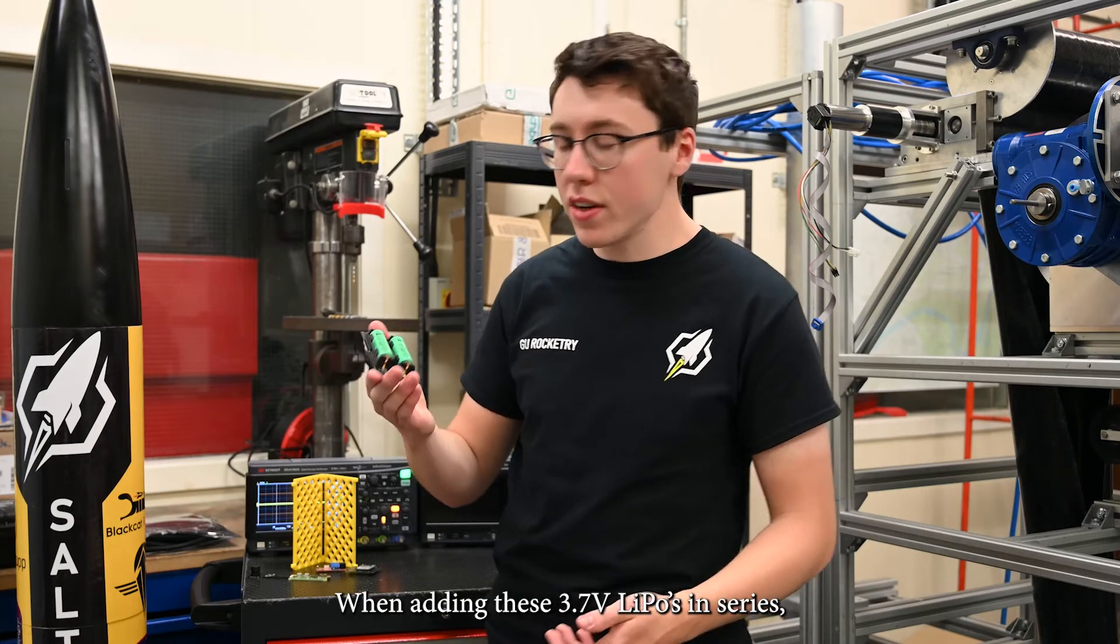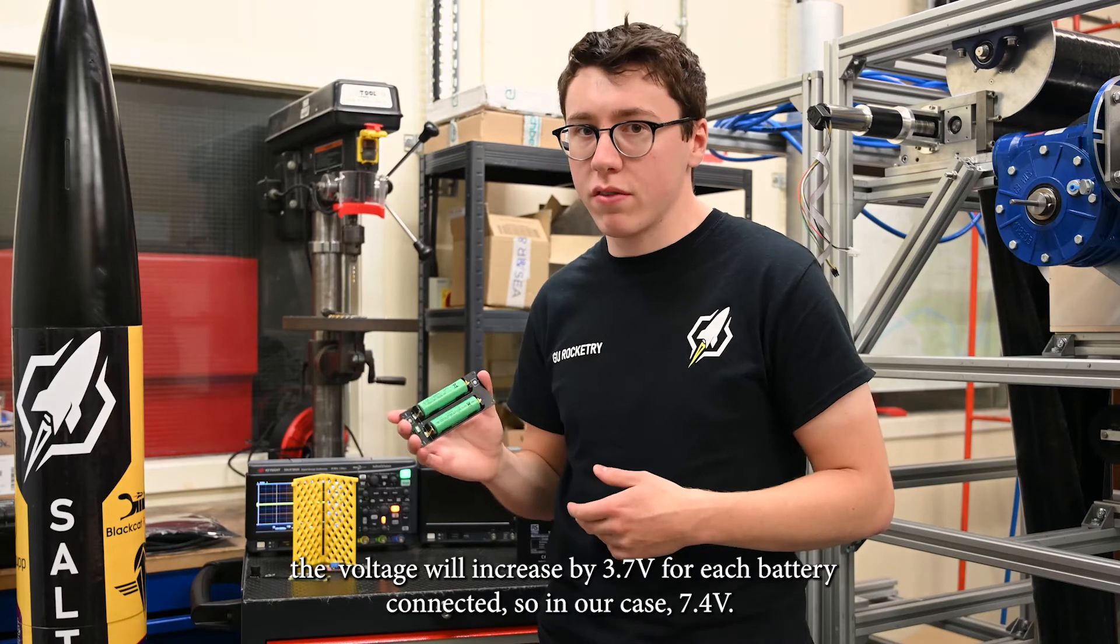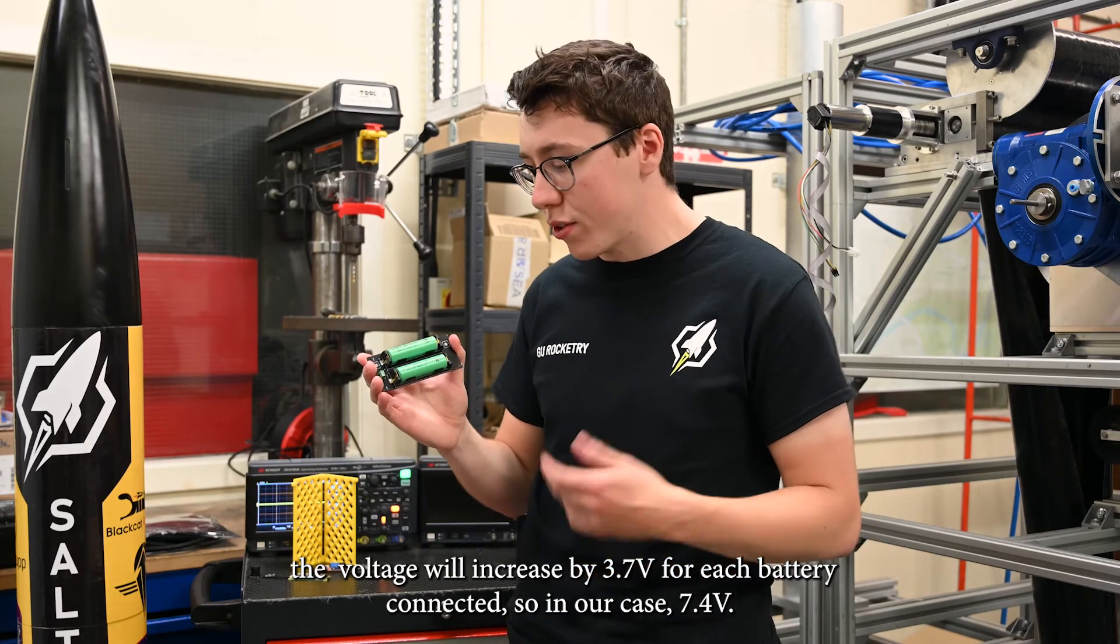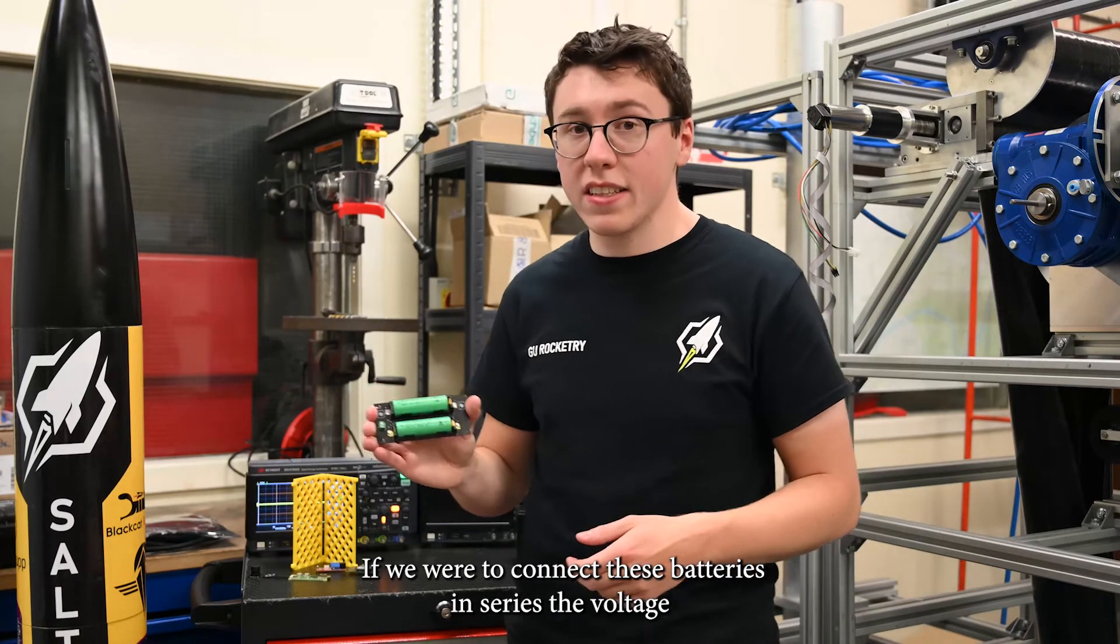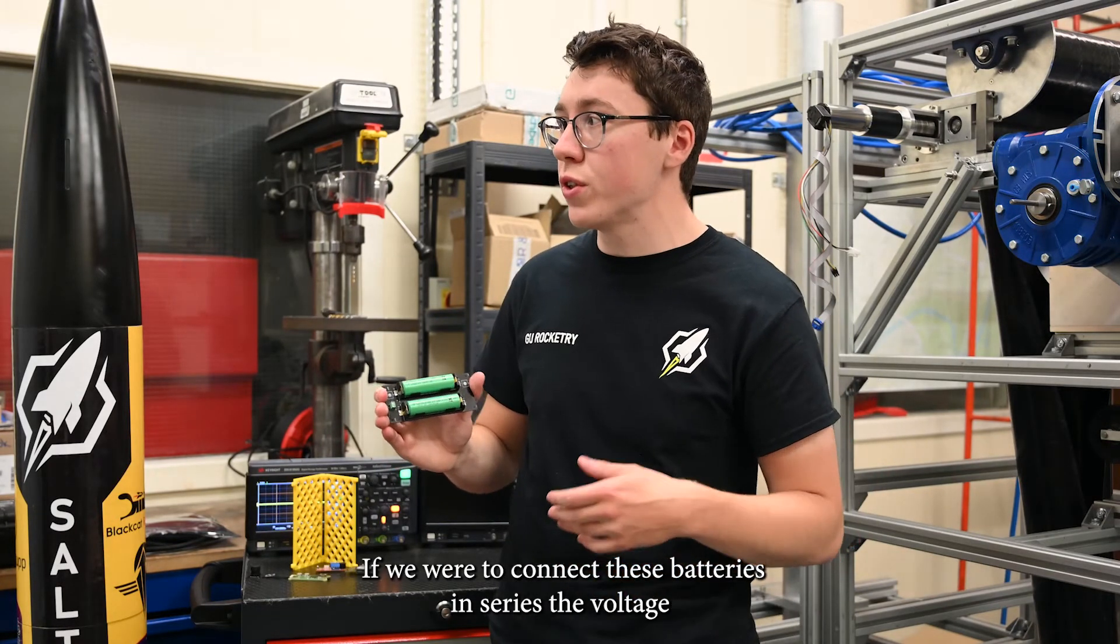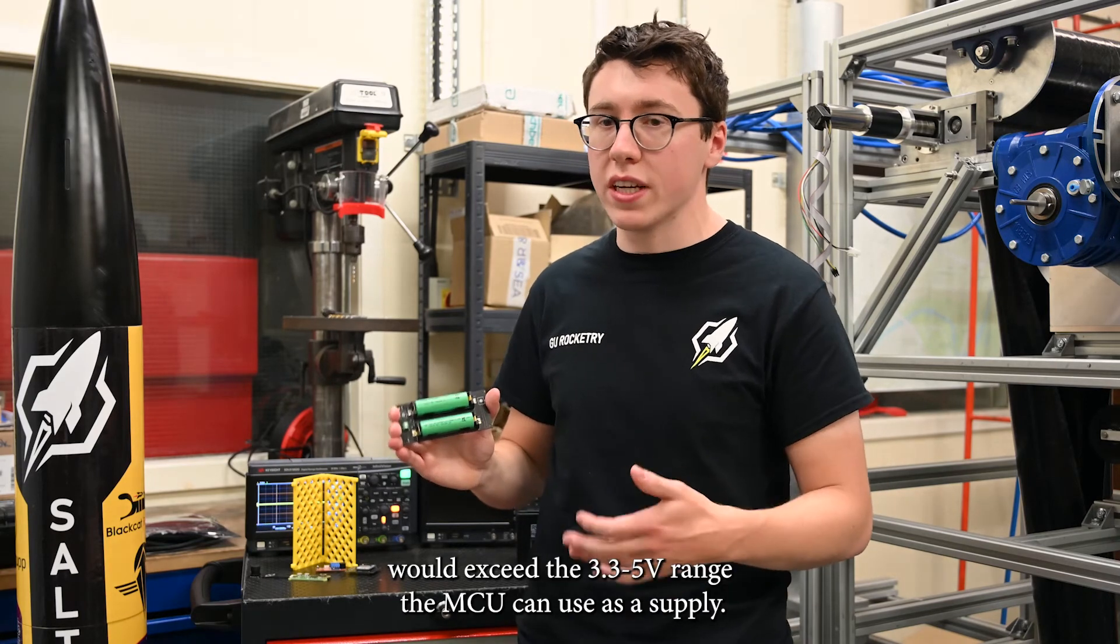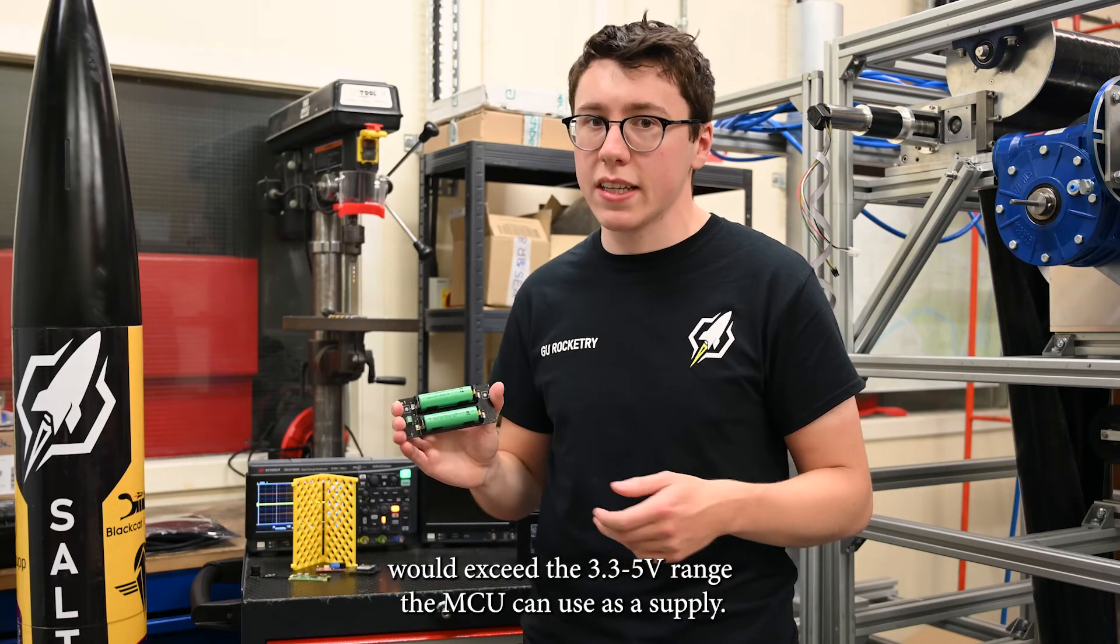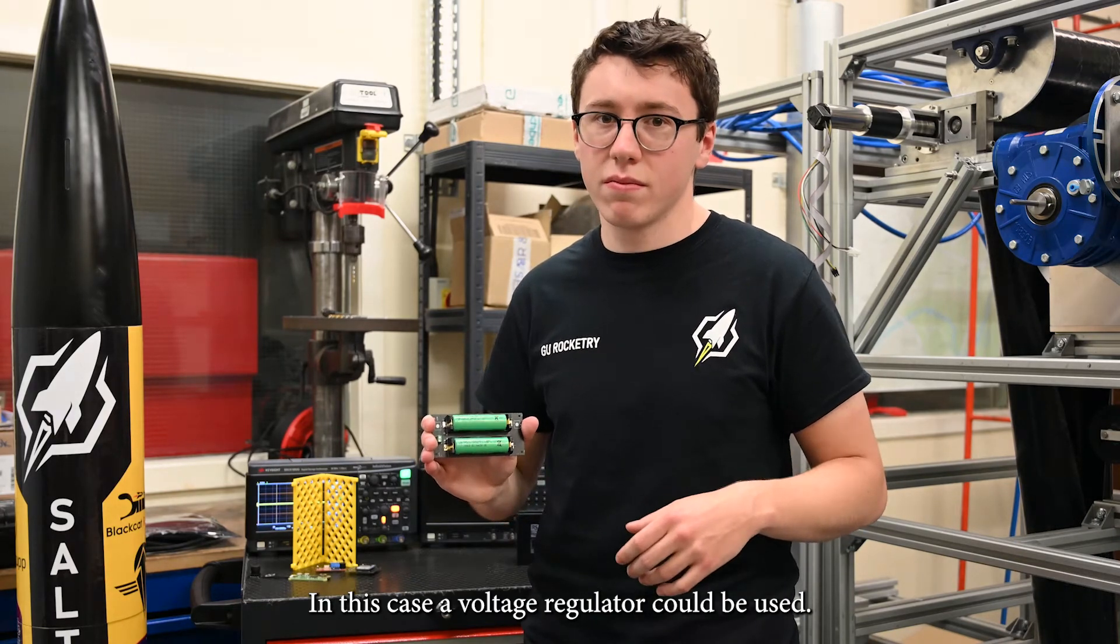When adding these 3.7V LiPos in series, the voltage will increase by 3.7V every time you add a battery. So in our case, 7.4V for two. If we were to connect these batteries in series, the voltage would be 7.4V, which exceeds the 3.3V to 5V range the microcontroller can take. In order to rectify this, a voltage regulator can be used.